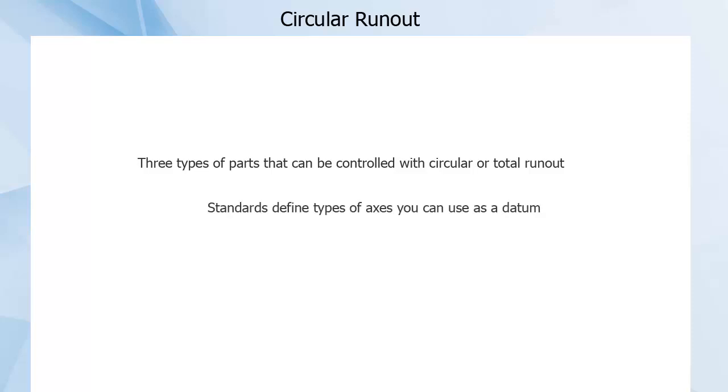Because of the measurement method used for runout, there are three options for parts that can practically be gauged for circular runout. These are ways in which the standards say you can define the required datum axis for circular and total runout controls. If your part does not meet one of these three descriptions, you likely want to consider a different control.